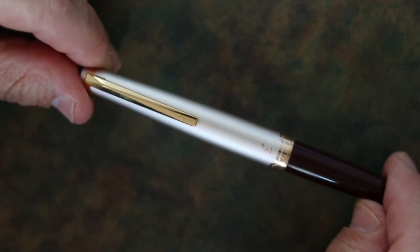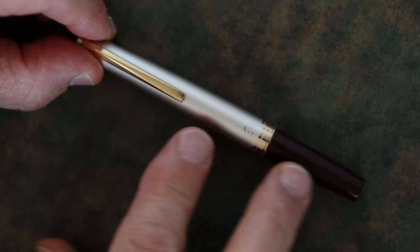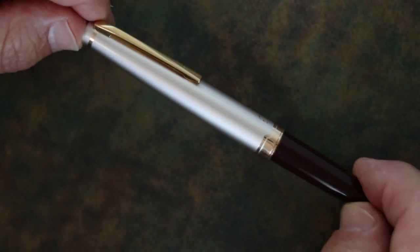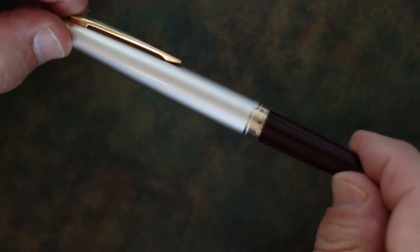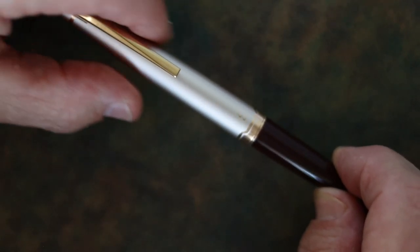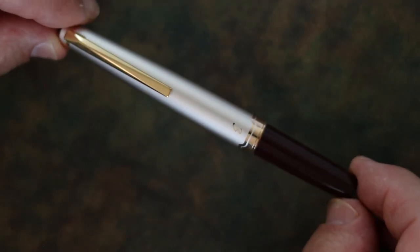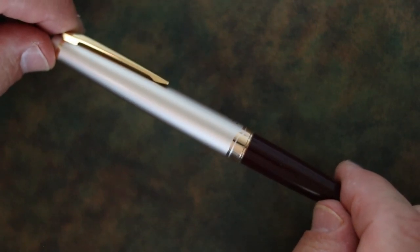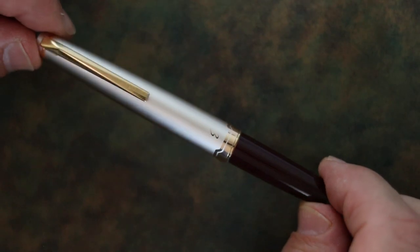This pen comes in two different styles. It comes in a black and gold, or black resin, black cap, with the gold trim and gold clip. And then this one, the burgundy, what they call the burgundy and ivory. And I think this is the most, by far, the most popular choice of people, for people when they purchase this pen.